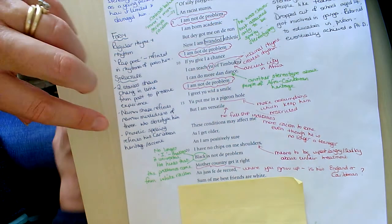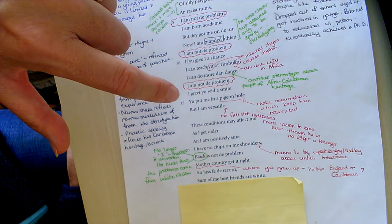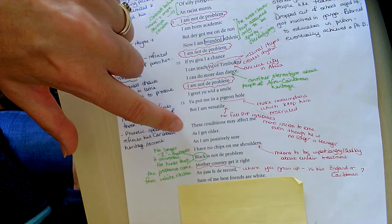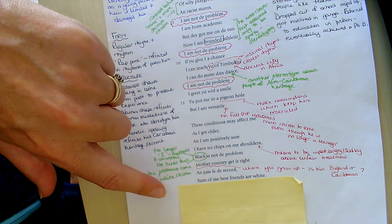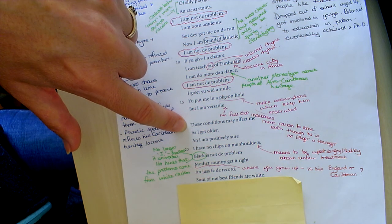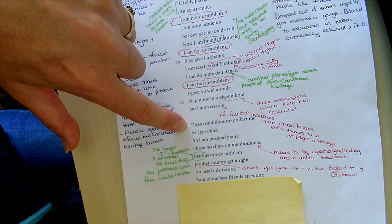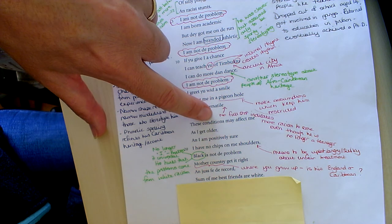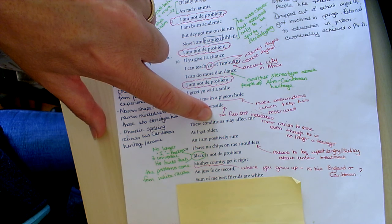And the refrain has gone now, notice. So the refrain's repeated several times in the past tense but as we go into now he says the refrain isn't used. These conditions may affect me as I get older, and by conditions I think he means the assumptions that people have made about him, stereotyping.